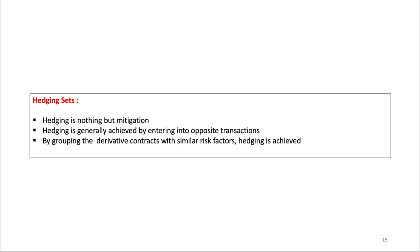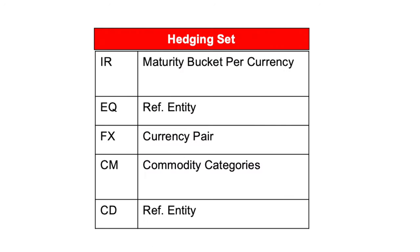Within each asset class, hedging sets have been defined. Hedging is generally achieved by entering into opposite transactions, and the regulator has allowed creating hedging sets to avail the benefit of mitigation while computing the PFE. We can create a hedging set by grouping derivative contracts with similar risk factors. The regulator-defined hedging sets include: Maturity Bucket per Currency, Reference Entity, Currency Pair, Commodity Categories, and Reference Entity.